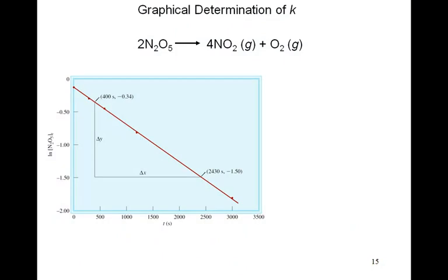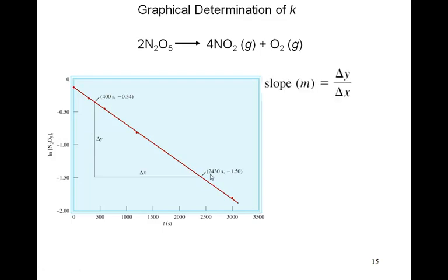Here is an example of the graphical determination of K. Here is a reaction — a single reactant reacting to form two products. Data was taken, and if we plot the log of the N₂O₅ concentration versus time in seconds, we see that we get a straight line. That straight line with a negative slope tells us this is definitely a first order reaction. Taking the slope by picking two points and computing delta Y divided by delta X gives us the value of minus K.